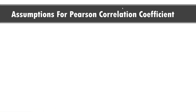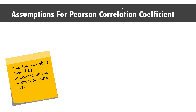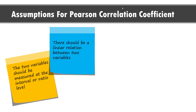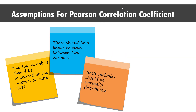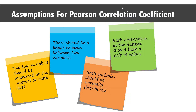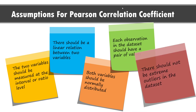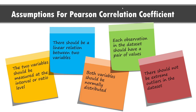Since Pearson correlation coefficient is a parametric test, one should make sure that certain assumptions are met. The two variables should be measured at interval or ratio level. There should be a linear relationship between the two variables. Both variables should be normally distributed. Each observation in the dataset should have a pair of values — meaning no missing data. Also, Pearson correlation coefficient is very sensitive to outliers, and they heavily affect the calculation. Even one outlier can substantially change the Pearson correlation coefficient. In such situations, it makes sense to remove the outlier from the dataset.